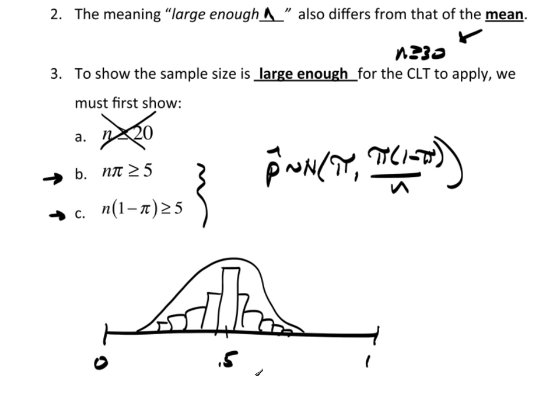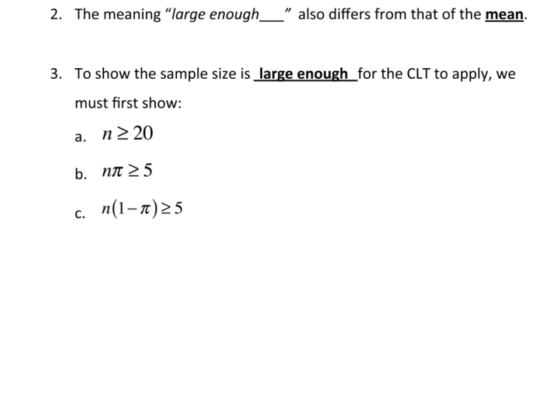But, what happens, let me eliminate that and start a fresh layer here. What happens if the proportion pi is very small? Let's say it's over here someplace. Well, now if I look at the distribution of probabilities, it's going to look something like this. See, there's no place to go on the left.